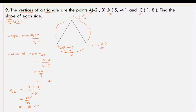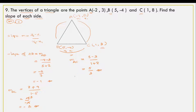Now for the slope of AC. MAC equals y2 minus y1 divided by x2 minus x1. With A at (-2, 3) and C at (1, 8): 8 minus 3 divided by 1 minus minus 2, which is 5 divided by 1 plus 2, giving us 5 divided by 3. So MAC equals 5 over 3.